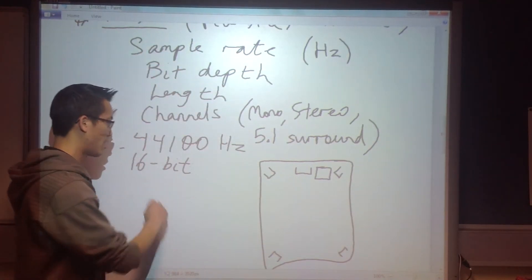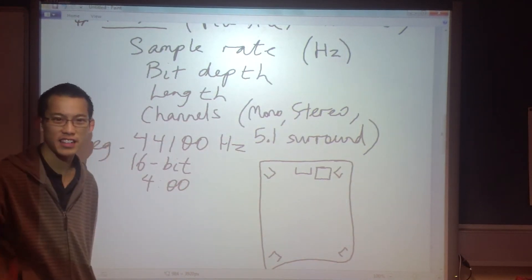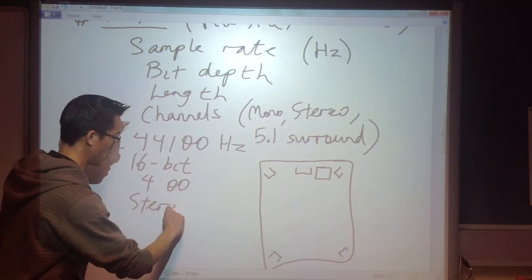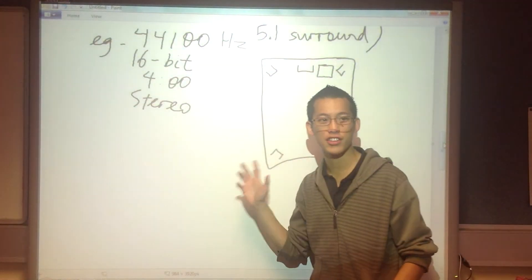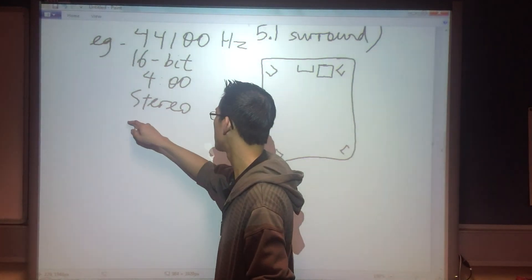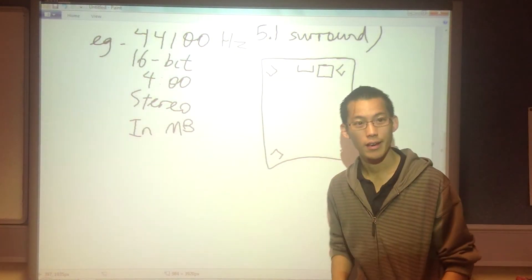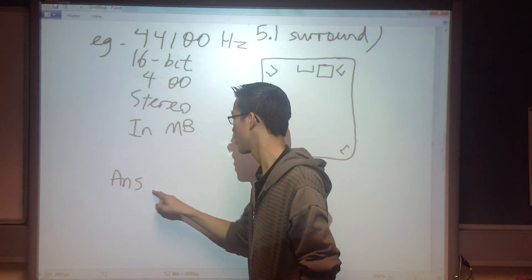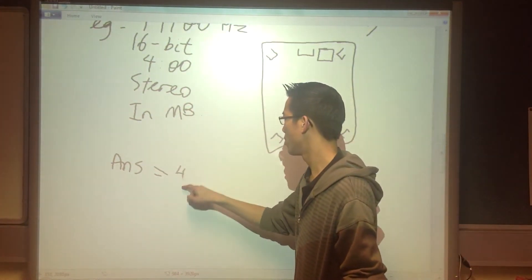Length - let's just say I don't know, four minutes. And how many channels? Let's just make it stereo because that's what most music is. So how would we work out the size of such a file? Let's work it out in megabytes. How do we do it? Just like before, I'm going to have to go down here to avoid my surrounds.